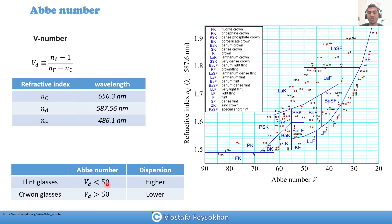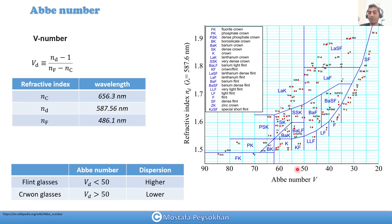For materials which are highly dispersive, the Abbe number is less than 50. As dispersion goes up, the Abbe number goes down. When dispersion is high and the Abbe number is less than 50, we call them flint glasses. For materials that have lower dispersion but higher Abbe number — higher than 50 — we call them crown glasses. In this graph, the 50 line is used to separate these two kinds of glass: flint and crown.